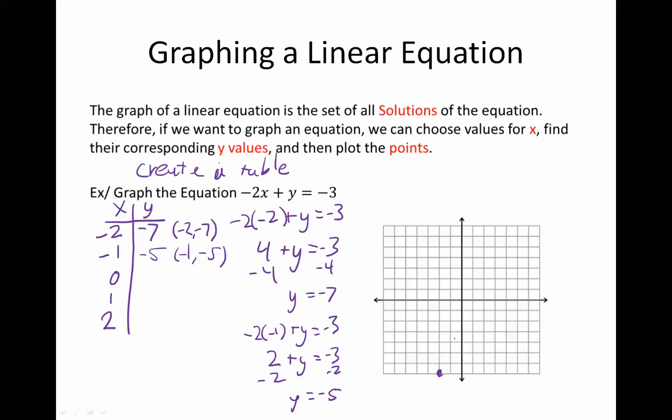So the point (-1, -5) is a solution: (-1, -5). Now I'm going to continue to do this with the rest of these values. -2 times 0 plus y equals -3, that's 0 plus y equals -3, so it's y equals -3.